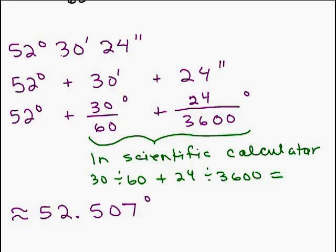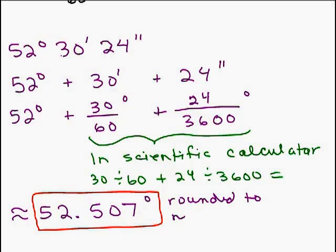Now notice that 30/60th right here of a degree, in other words 30 minutes, that's like a half an hour, right? So it's a half a degree which is 0.5. So it seems like it's right. We've got the 0.5 part and then this 24 seconds is really tiny. That's this little extra piece here. So that seems like a reasonable answer. So that is our answer rounded to the nearest thousandth of a degree.